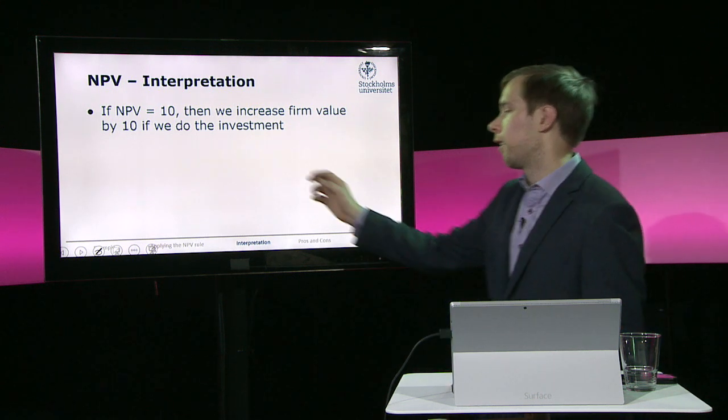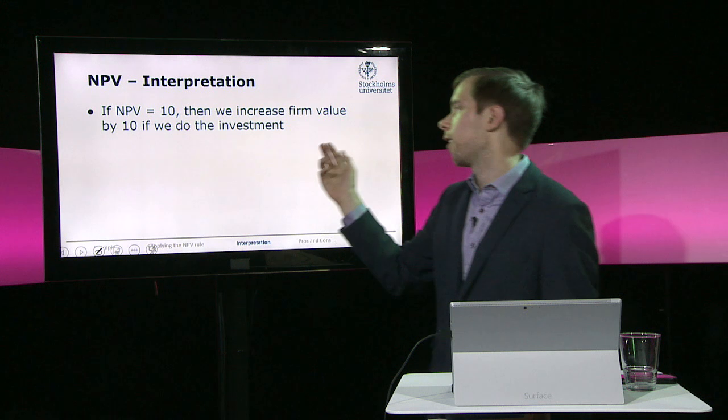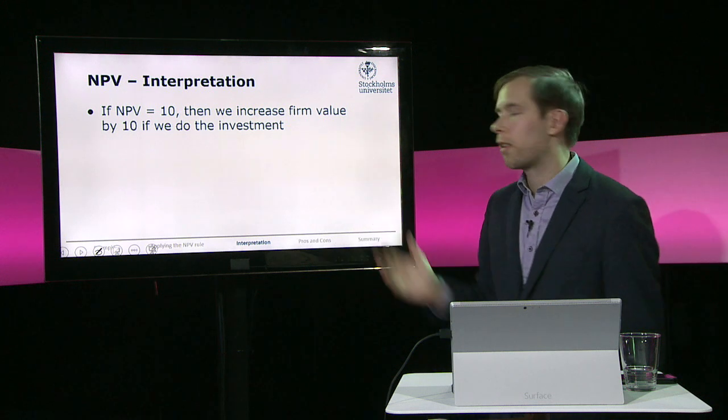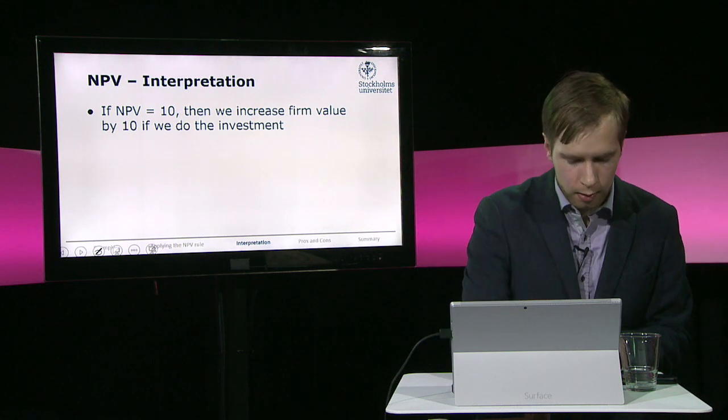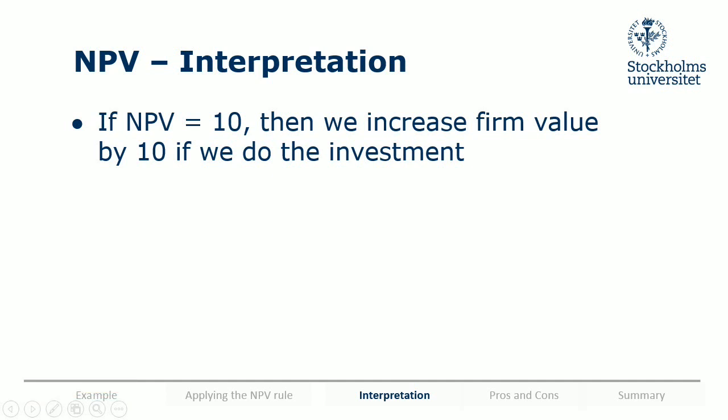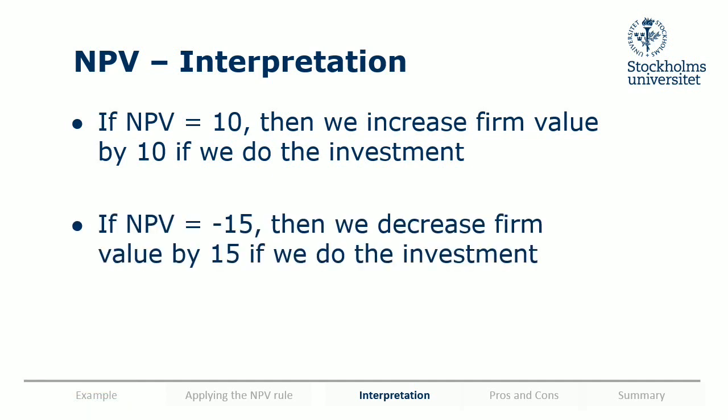For a firm, if the NPV is equal to 10, it means we increase the firm value by 10 if we do the investment. On the other hand, if the net present value is negative — say minus 15 — then we would decrease the firm value by doing the investment. In the same way that an NPV of 50 is like saving 50, a negative one would be like spending an extra unnecessary 50.